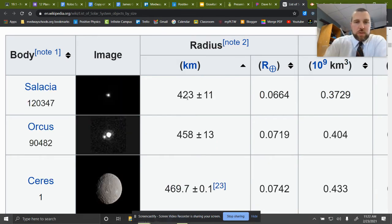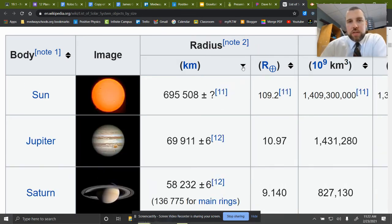So a kilometer is 1,000 meters. So this would be 69,911,000 meters, or 69.911 times 10 to the sixth meters. So that's the actual value of the radius of Jupiter, as close as we can tell.